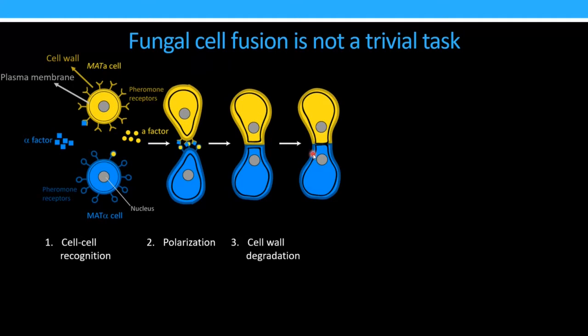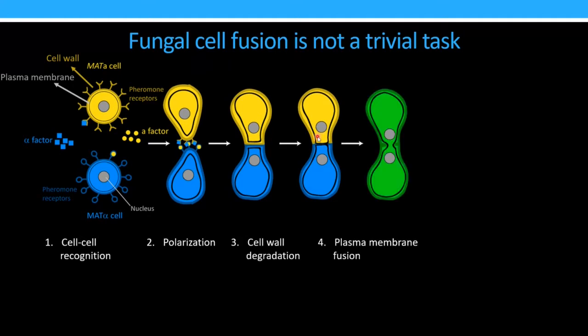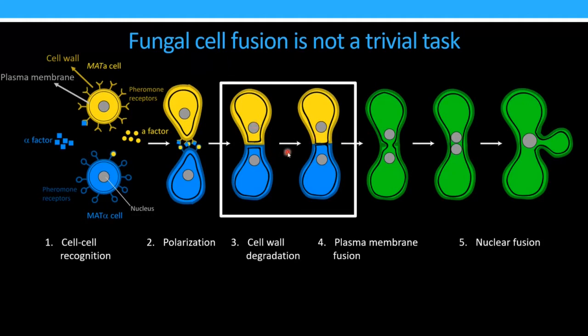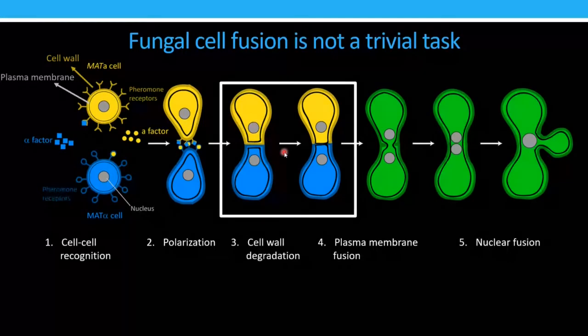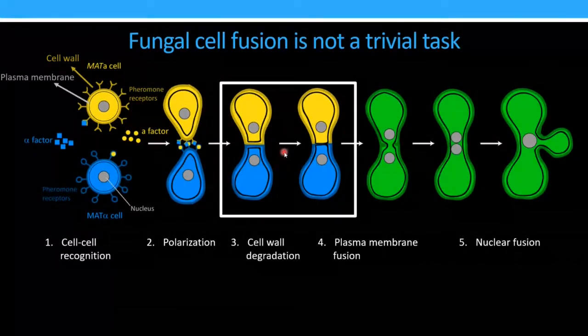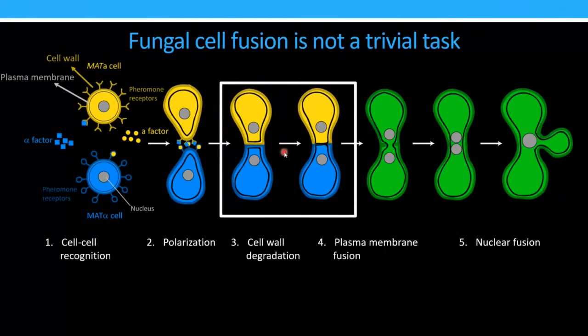And so we actually have to degrade the cell wall right in the right spot for this to happen. Once we do that, the plasma membranes can come together and fuse, allowing the cytoplasms to mix. And then the last step of this process is for the two haploid nuclei to fuse and form one diploid nucleus. And so I'm interested in this step right here where the cell wall gets degraded. Because if you think about the suit of armor reference, if you were to take off a piece of armor at a really bad time in battle, that could be very detrimental. And that's the same thing for the yeast cells. If they get rid of their cell wall in the wrong place or at the wrong time, they will die. So we want to know how this is regulated.